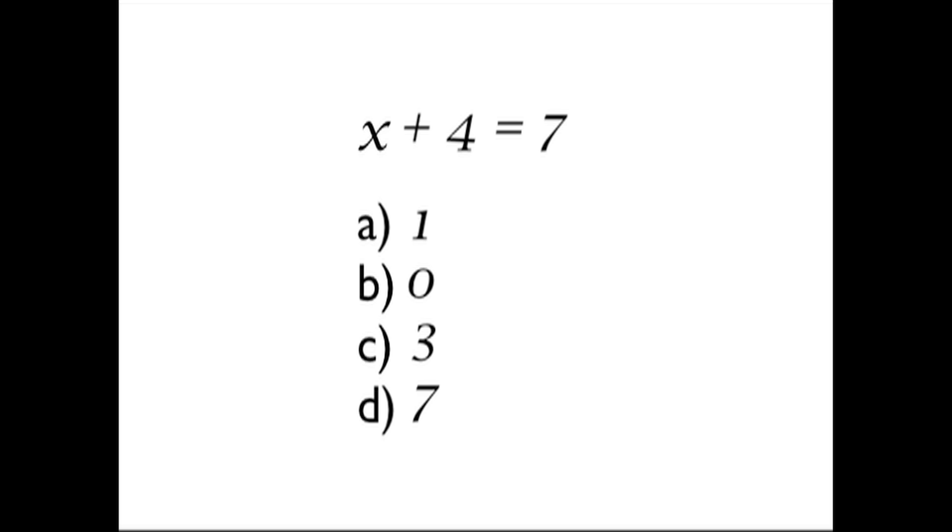X plus 4 equals 7. Let's pretend we do not have the skills to work out this problem through inverse operations, so we're going to work backwards by plugging in our choices. Let's try choice A. Choice A is 1. Let's try it in. When I put in choice A, does it give me a true statement where both sides are equal, like they should be? The answer is no.